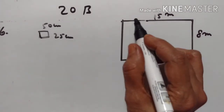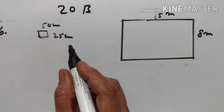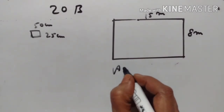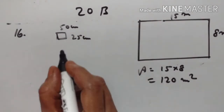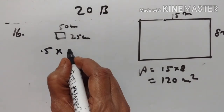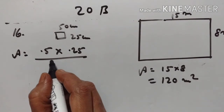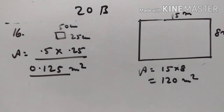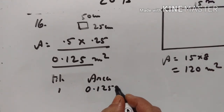16th problem. A floor which measures 15 meters by 8 meters is to be laid with tiles measuring 50 centimeters by 25 centimeters. Find the number of tiles required. The area of the floor is 15 into 8 equals 120 square meters. For the tile area: 50 centimeters equals 0.5 meters, and 25 centimeters equals 0.25 meters. So the area of one tile is equal to 0.125 square meters.